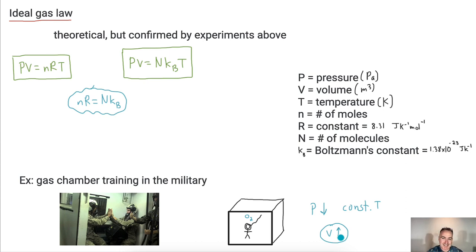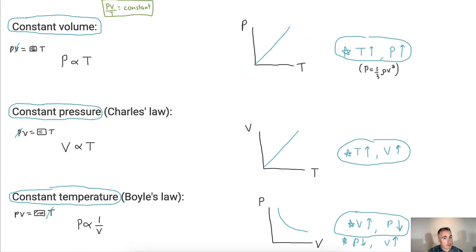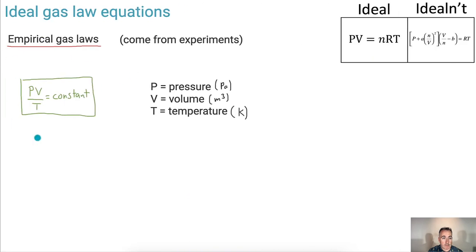But what does this do for you in real life? It does explain how pressure, volume, and temperature are related. The equation PV equals nRT is very important, and so is the empirical relationship — they show how pressure, volume, and temperature relate for an ideal gas.